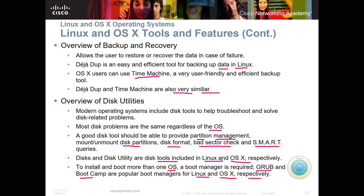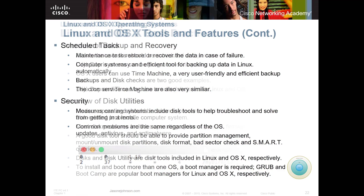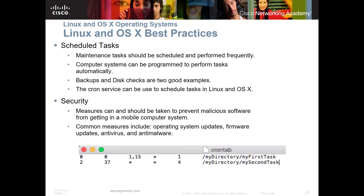When we look at scheduling tasks, maintenance tasks should be scheduled and performed frequently. Computer systems can be programmed to perform tasks automatically, such as backups and disk checks — those are some good examples of frequent tasks. The Cron service on Linux can be used to schedule tasks in Linux and OS X.